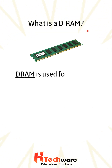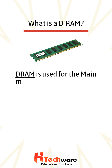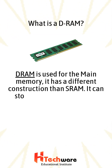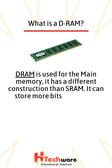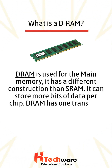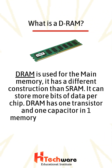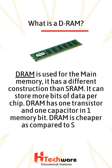What is DRAM? DRAM is used for the main memory. It has a different construction than SRAM. It can store more bits of data per chip. DRAM has one transistor and one capacitor in one memory bit. DRAM is cheaper as compared to SRAM.